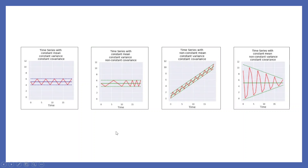Let's understand this concept. In the first plot, just see the blue line. This blue line is for the constant mean. See the distance between the blue dotted lines — it is constant. This is an example of constant mean. See the distance between the red lines — this is constant. This is an example of constant covariance.